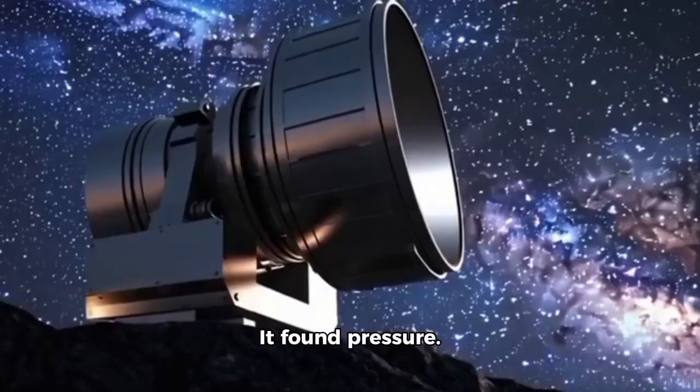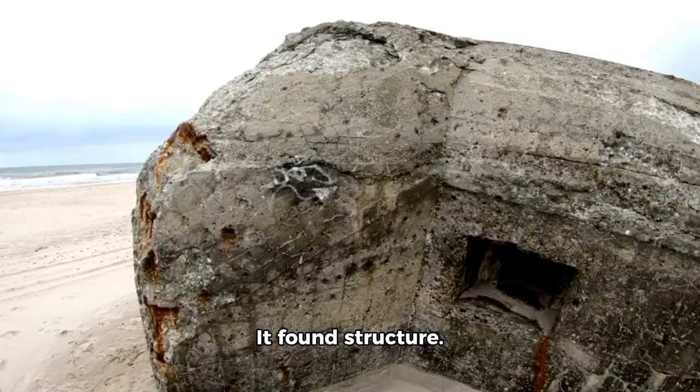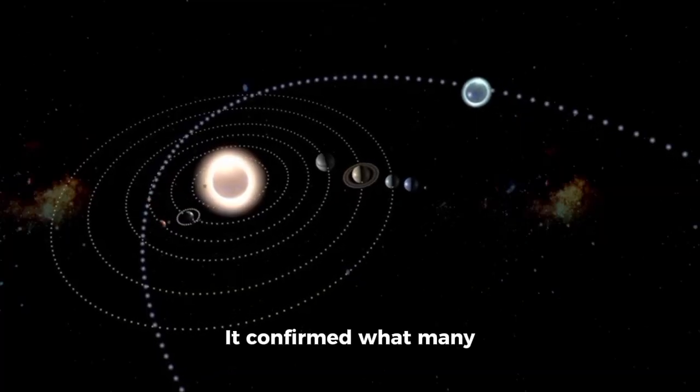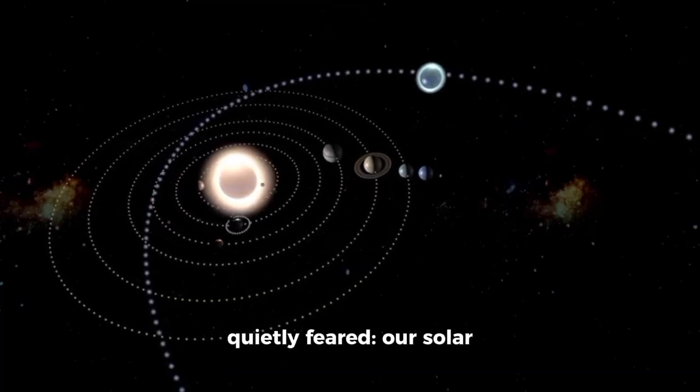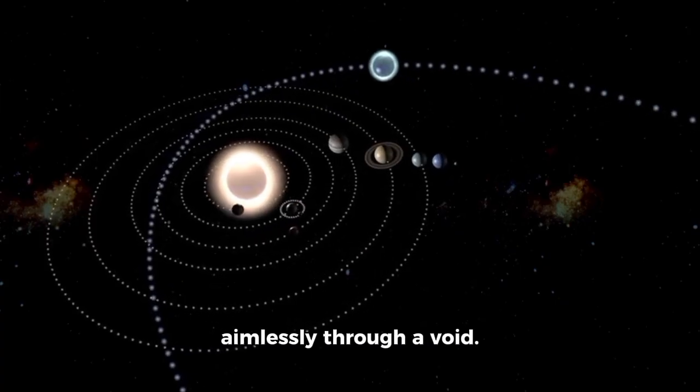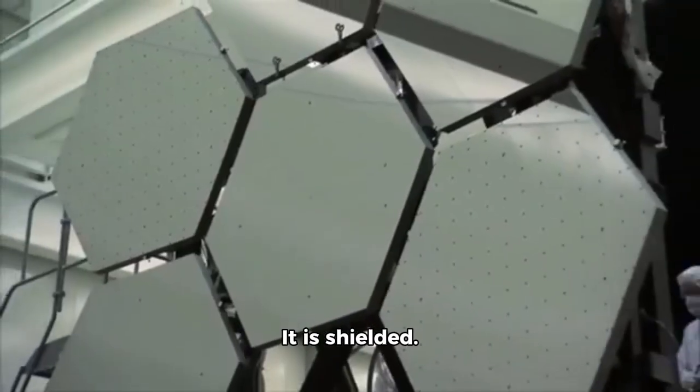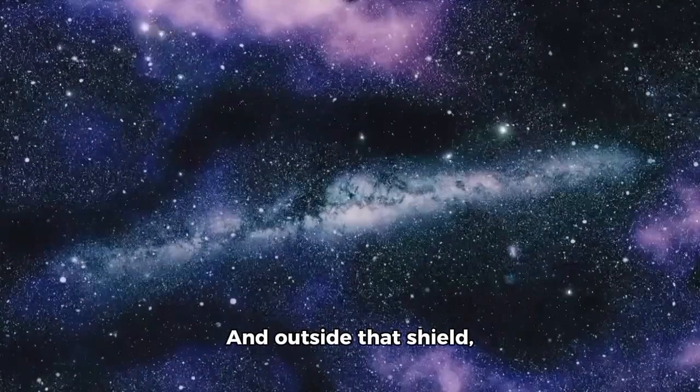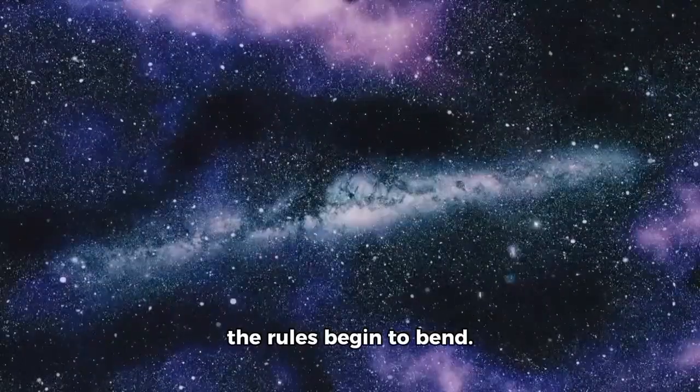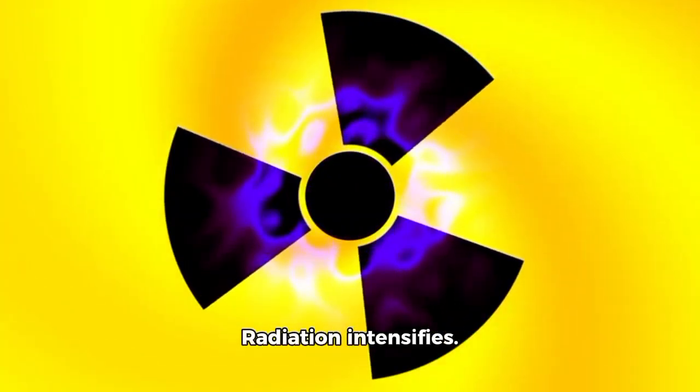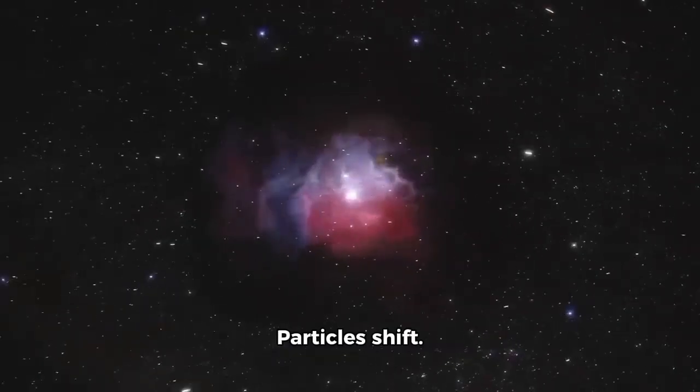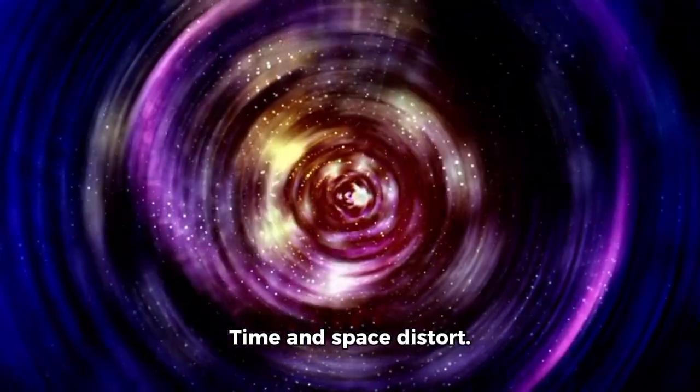It found change. It found pressure. It found structure. It confirmed what many quietly feared. Our solar system is not wandering aimlessly through a void. It is shielded. And outside that shield, the rules begin to bend. Radiation intensifies. Fields align. Particles shift. Time and space distort.